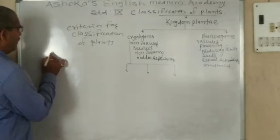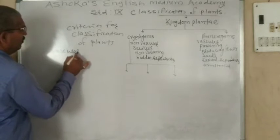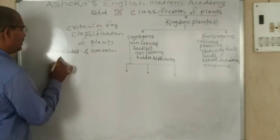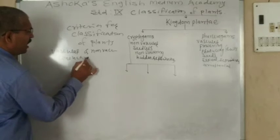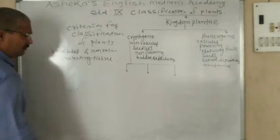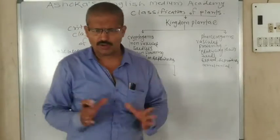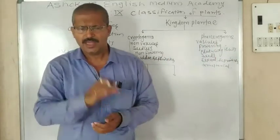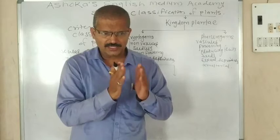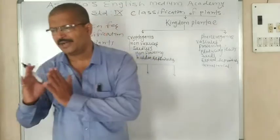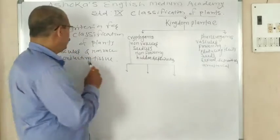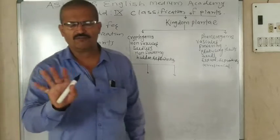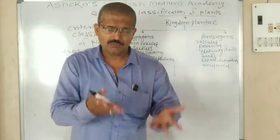The first criterion is vascular versus non-vascular — whether conducting tissues are present or not. To carry water, food material, and minerals, a specific conducting system is required. So plants having vascular tissues and plants having no vascular tissues — this is the main criterion for classification of plants.